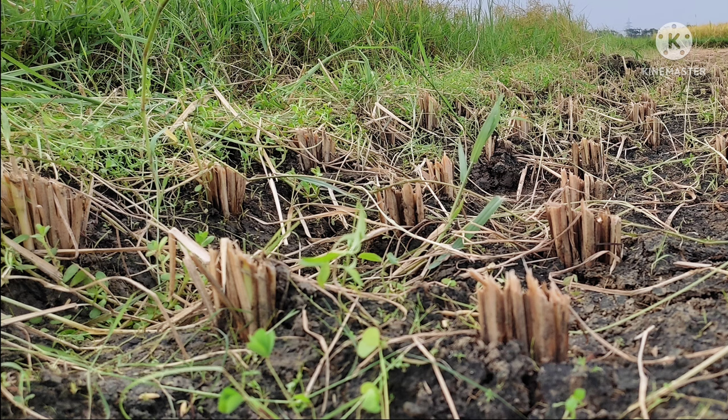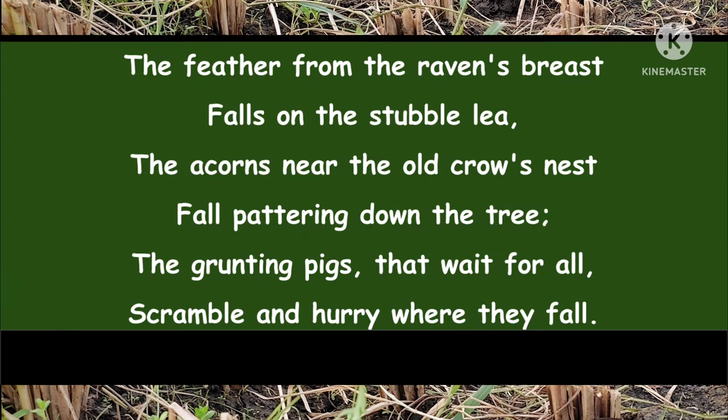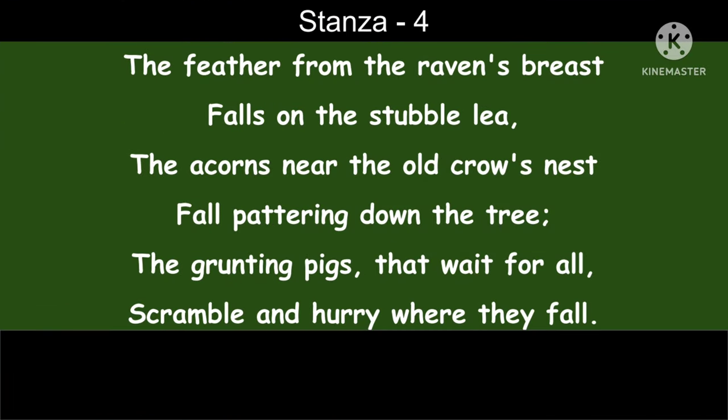This lea or grassland is covered with stubble from the harvested crops. The raven is flying over this stubble field and its feathers are falling and drifting down from the raven's breast onto the ground below.